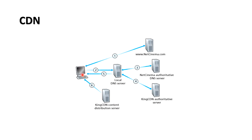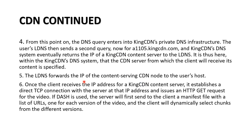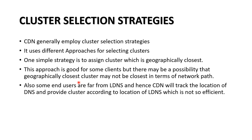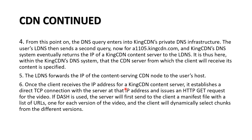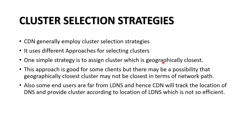In the fifth step, King CDN serves the client with the video. These are the six steps of CDN operation. Now, talking about cluster selection strategies: in steps four and five, the authoritative King CDN server gives the IP of the closest CDN server. One simple strategy is to select the geographically closest server, but this is not always good because the geographically closest cluster may not be the closest in terms of network path — the network path may actually be longer for that cluster.